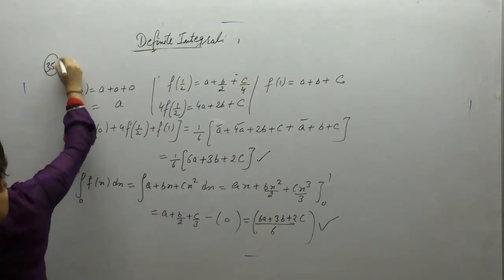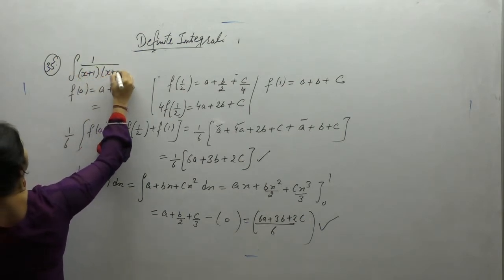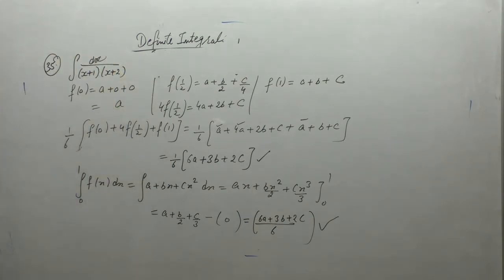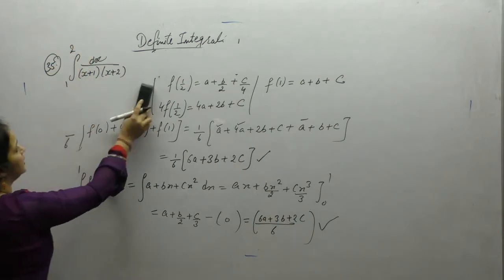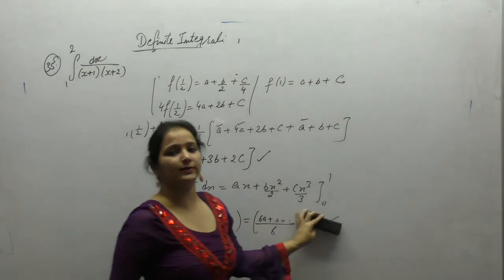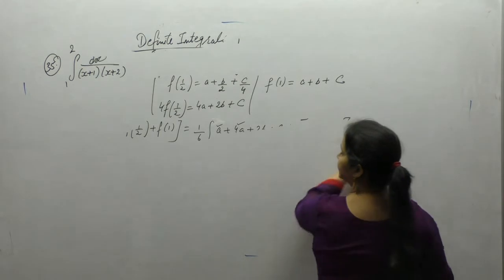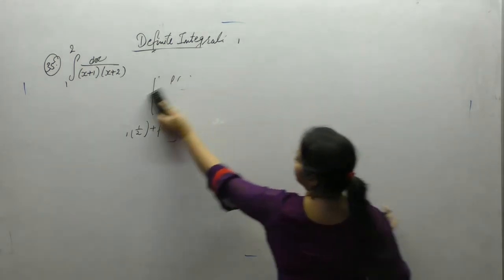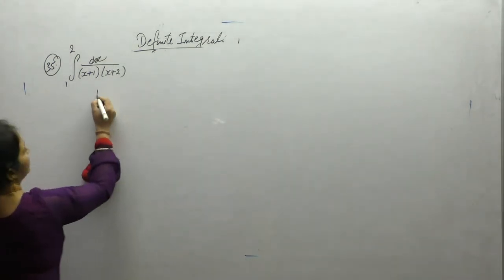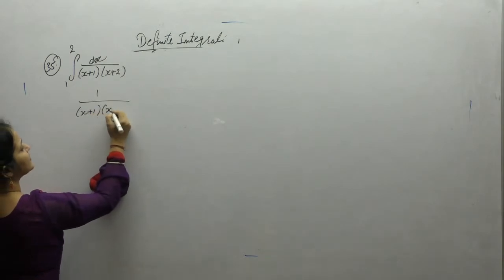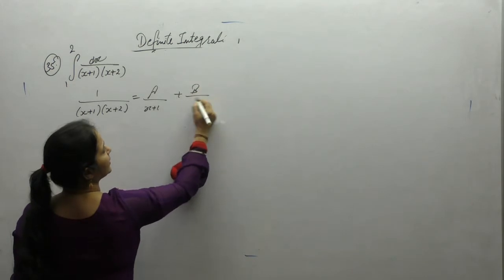The next problem: integral of 1/((x+1)(x+2)) with limit 1 to 2. This type of integral we solve using partial fractions. Both factors in the denominator are linear, so we write it as A/(x+1) + B/(x+2).